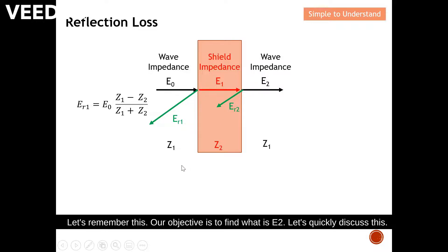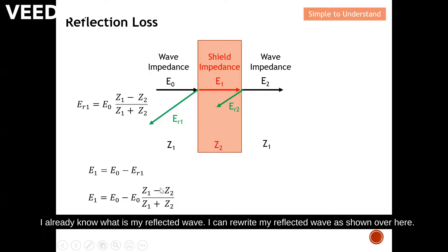In order to find E1, if I know my incident wave, and then incident wave minus the refractor wave, I will be able to know my E1. This equation is defined by most RF engineering books. By energy conservation, I assume that energy cannot be created and cannot be destroyed. So if I know my incident wave and I minus away my refractor wave, I will be able to find what is E1. I already know what is my refractor wave. I can rewrite my refractor wave as shown over here. This is an equation that I've done on the previous slide.